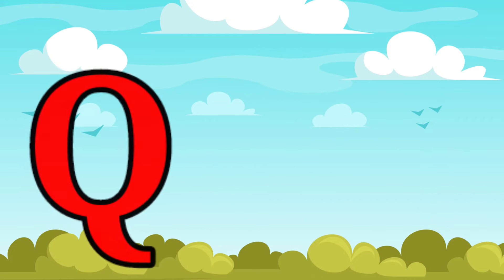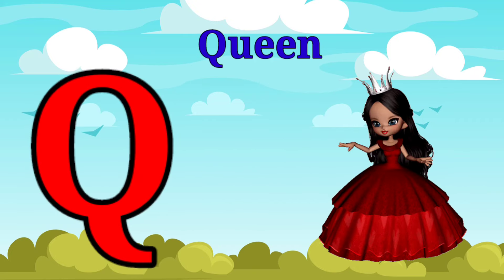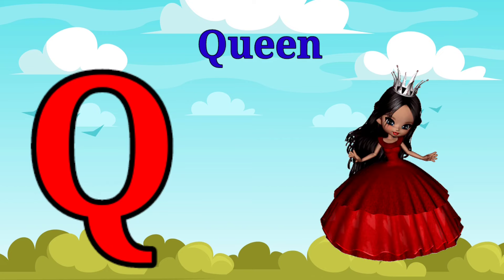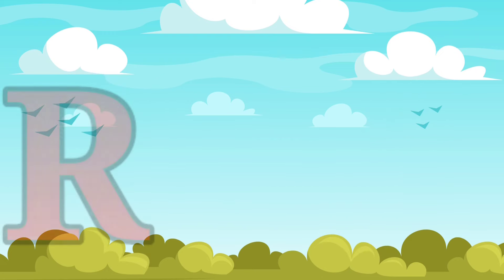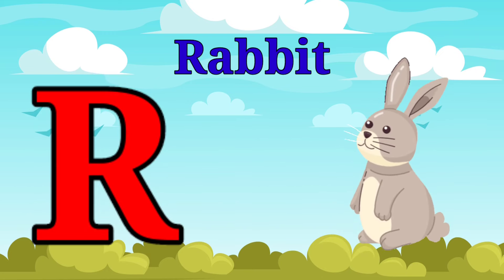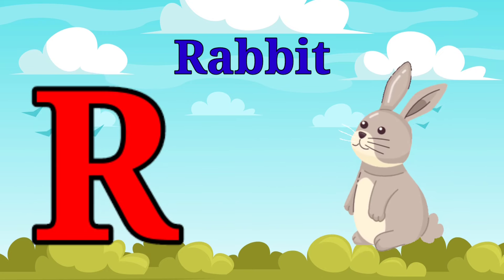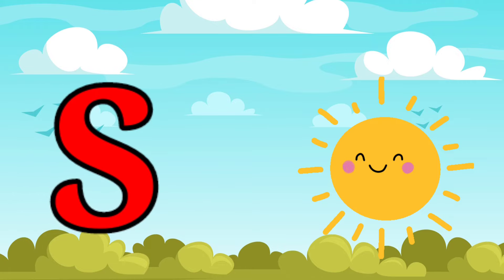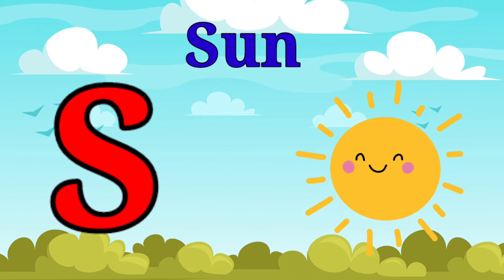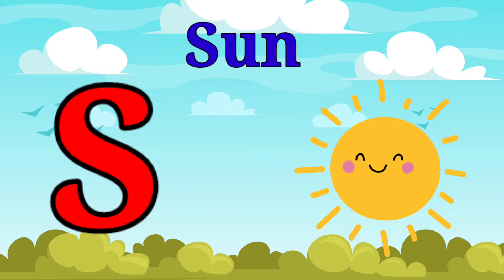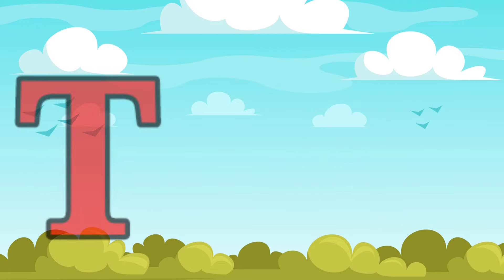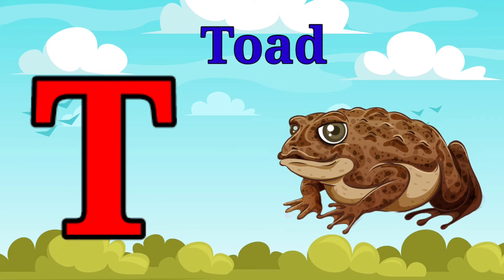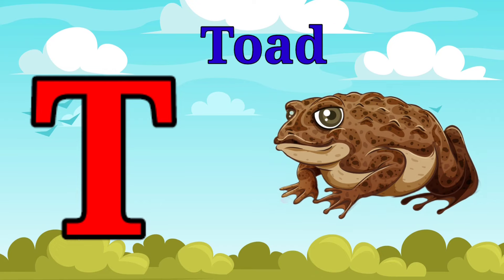Q is for queen, q-q-queen. R is for rabbit, r-r-rabbit. S is for sun, s-s-sun. T is for toad, t-t-t-toad.